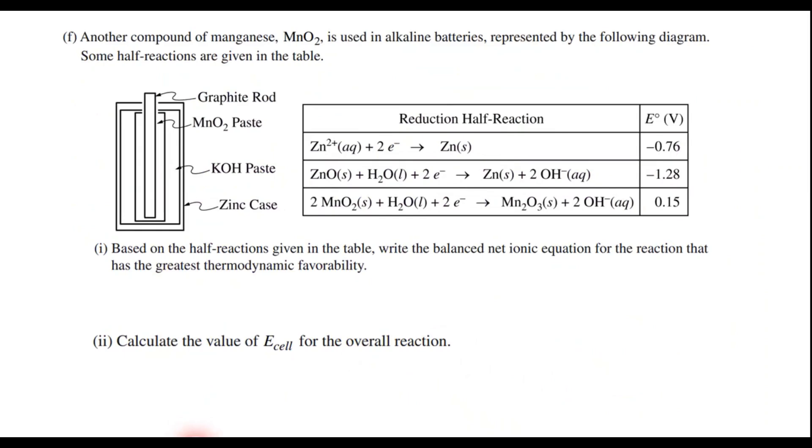So here we have, in part F, an electrochemistry question, a galvanic cell. And the question says, based on the half reactions, write the balanced net ionic equation for the reaction that has the greatest thermodynamic favorability. What you have to remember is, greatest thermodynamic favorability means the largest E cell. That's essentially the kind of code for that. And so which of these three, which two of these three, will give us the largest E cell?